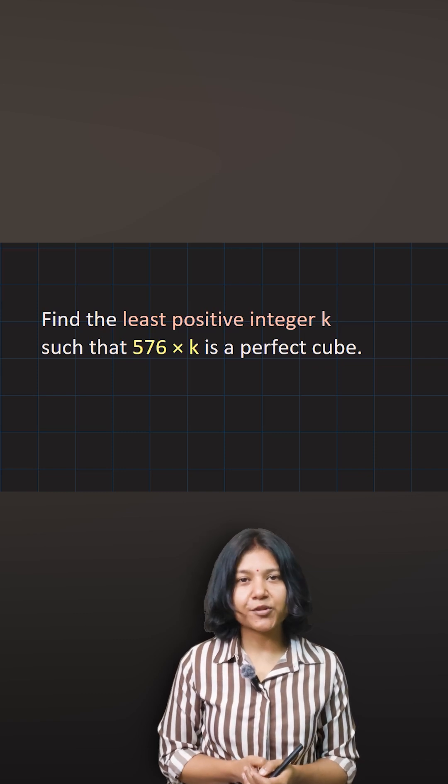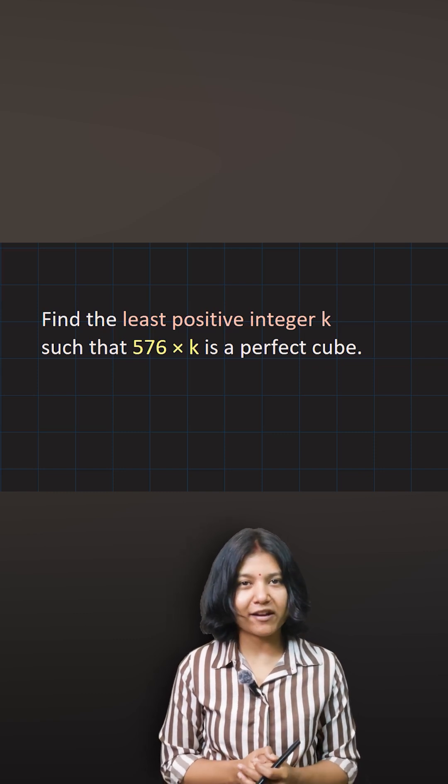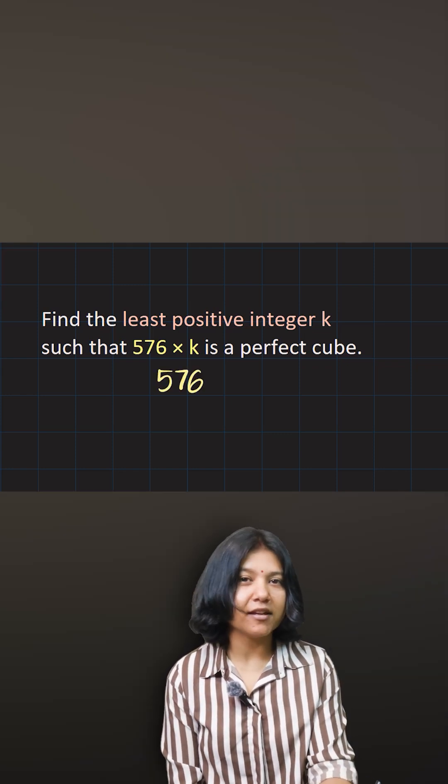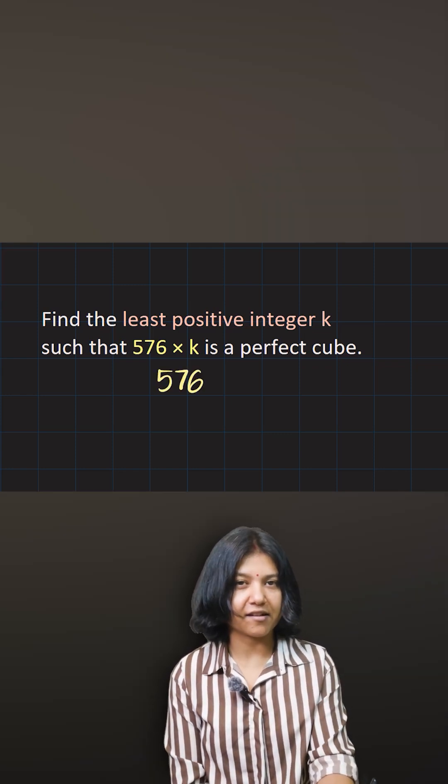If you're given a number and need to multiply something to make it a perfect cube, you think about the closest cube number that could be a factor of 576. I'll always begin with the cube numbers that I know.